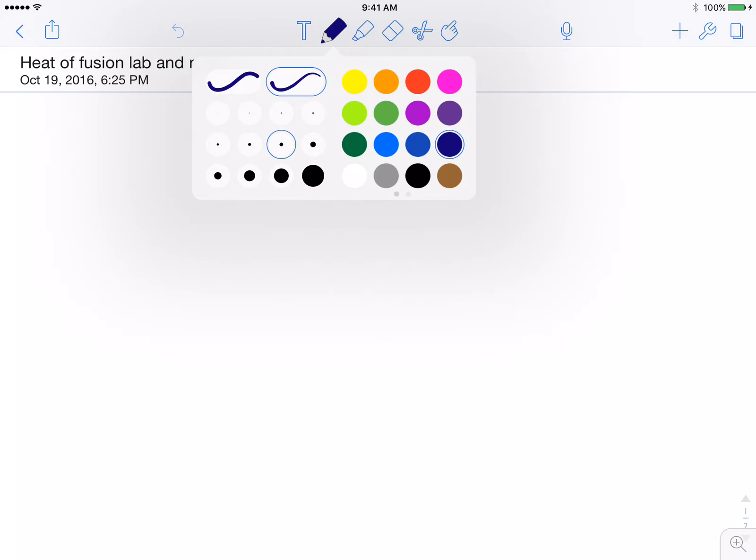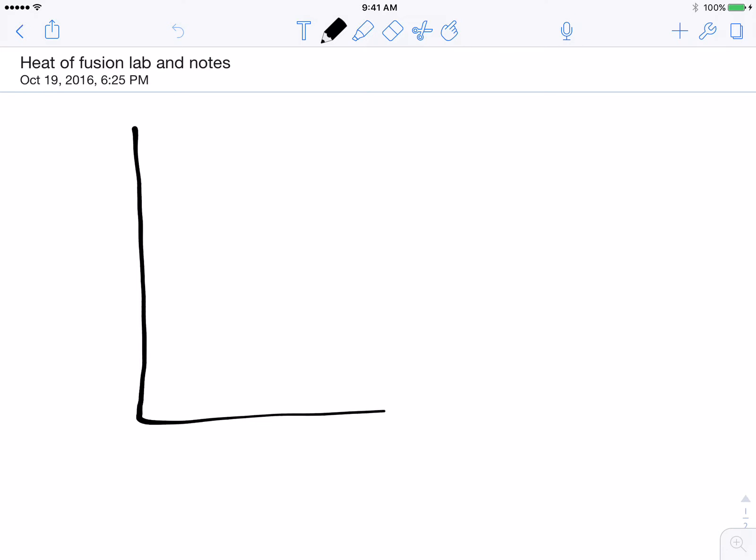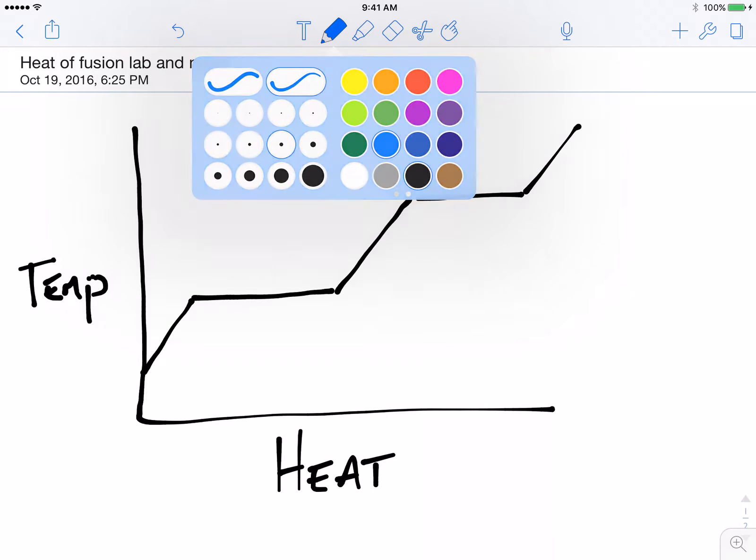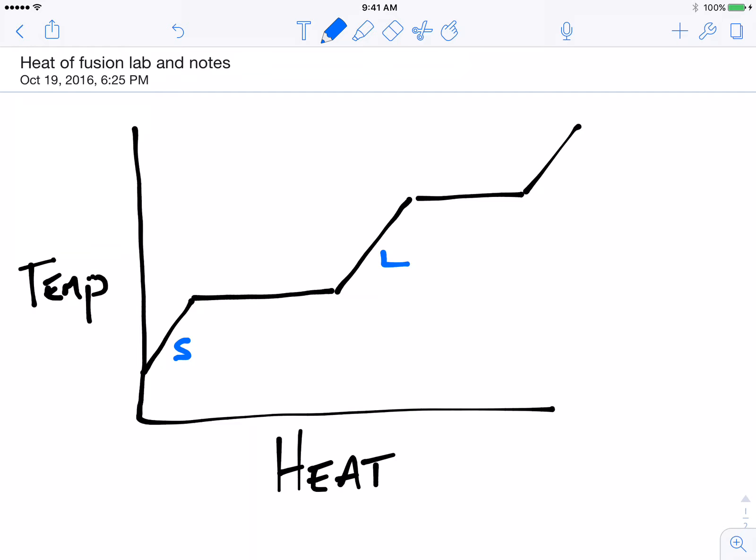So what we're going to do is start out and draw a phase change diagram for water. I've got temperature on the y-axis and I've got heat on the x-axis. And for water, our phase change diagram is going to look something like this, where we have solid, liquid, gas on the angled parts and then solid plus liquid in the flat part there and liquid plus gas here.